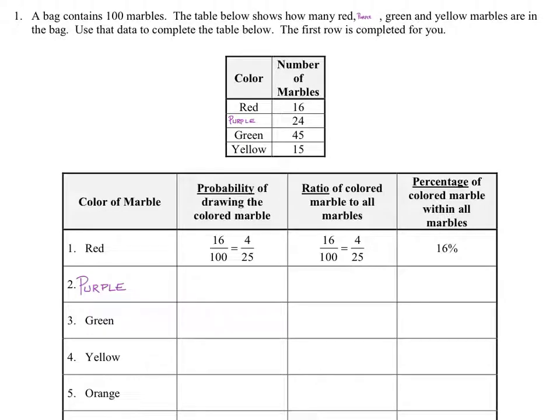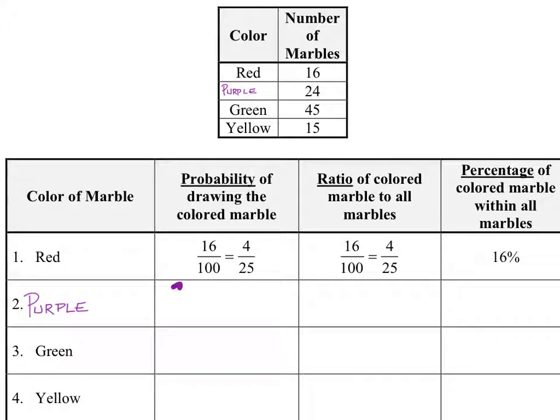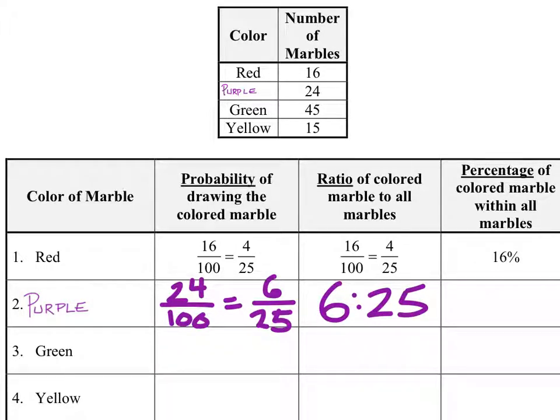So purple marbles, the probability of drawing a purple marble would be 24 out of the hundred, which would also simplify to 6 twenty-fifths. So the ratio of colored marbles to the marbles in this case is 6 to 25. Finally, the percentage, I'm just going to change the 24 hundredths into a percent, 24 percent.